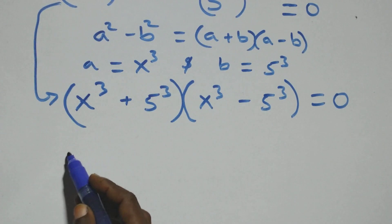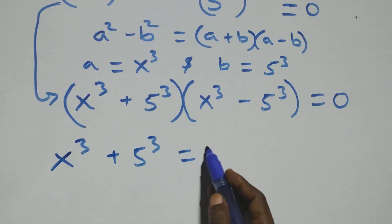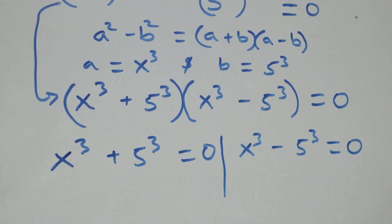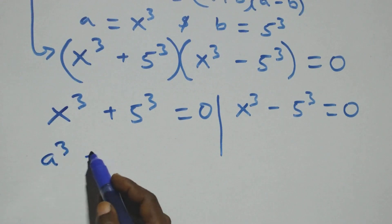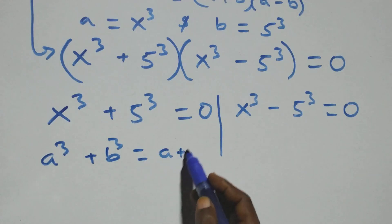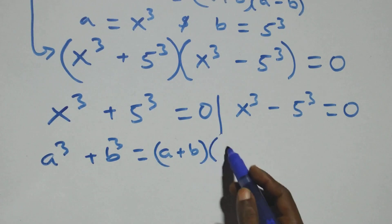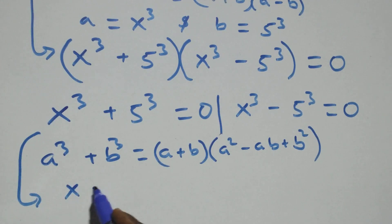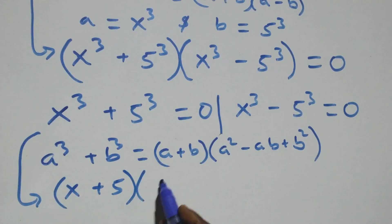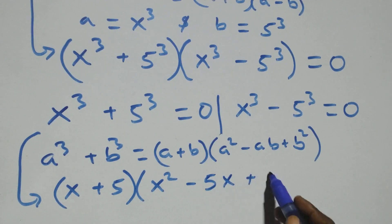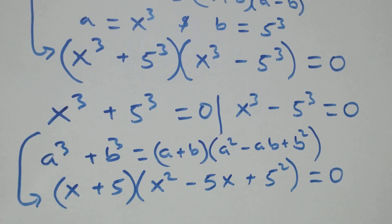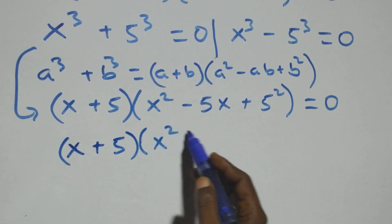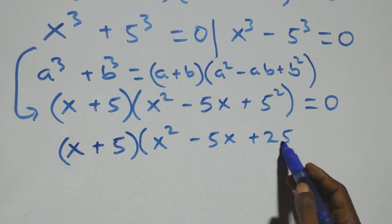We have two possible cases: the first is x raised to power 3 plus 5 raised to power 3 equals zero, or x raised to power 3 minus 5 raised to power 3 equals zero. Solving the first case, this follows from a cubed plus b cubed equals (a plus b)(a squared minus ab plus b squared), which gives us (x plus 5)(x squared minus 5x plus 25) equals zero.